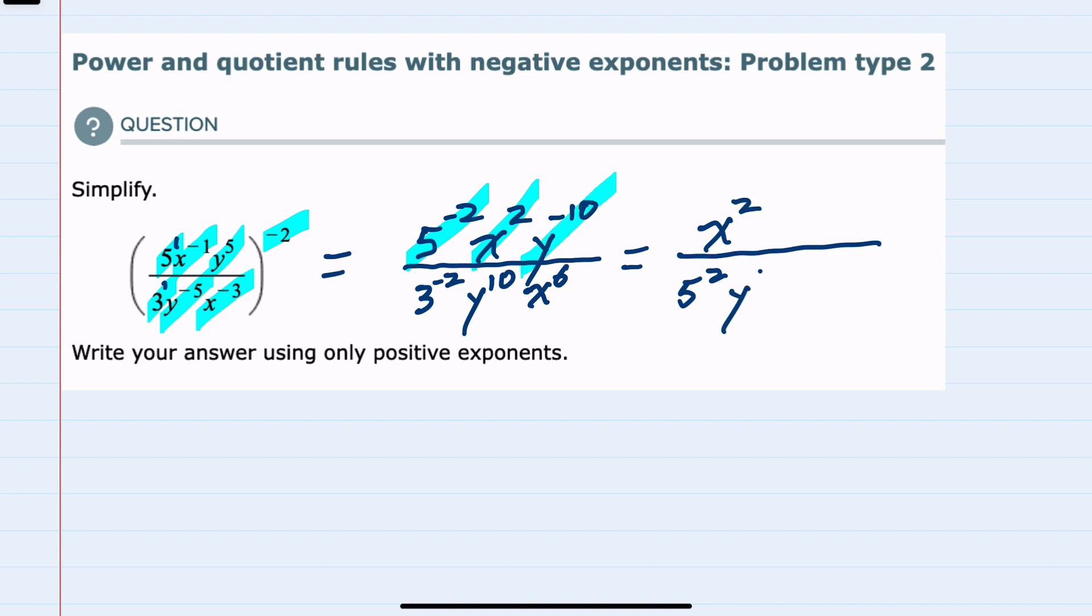The 3 negative 2 would move to the top as a 3 squared. The y^10 would stay in the bottom, and the x^6 with a positive exponent would also stay in the bottom.